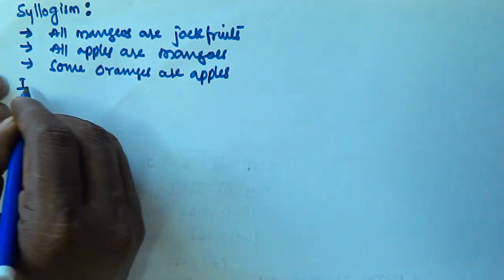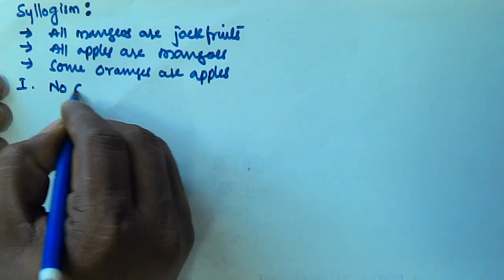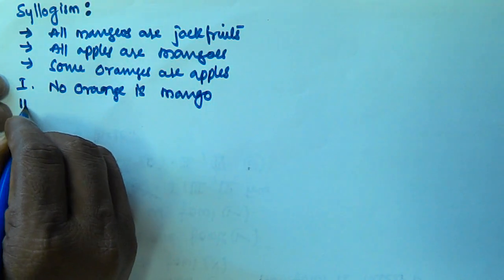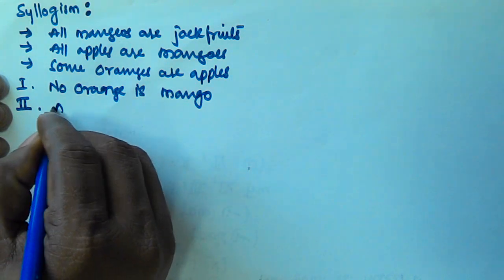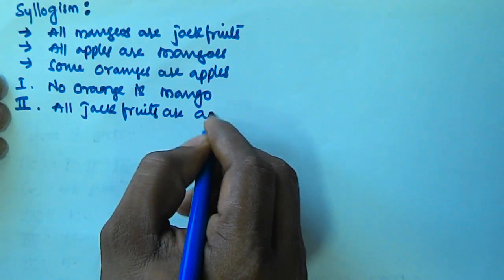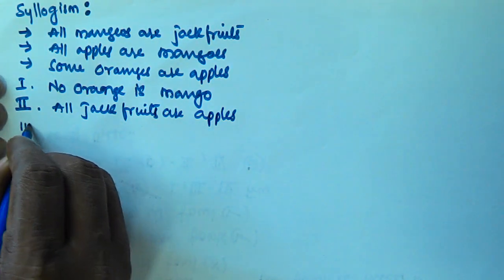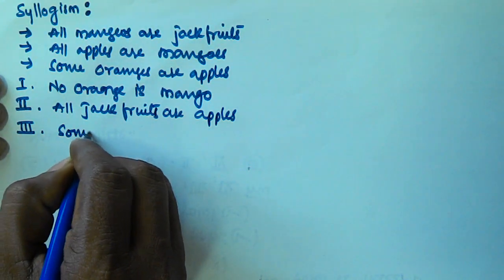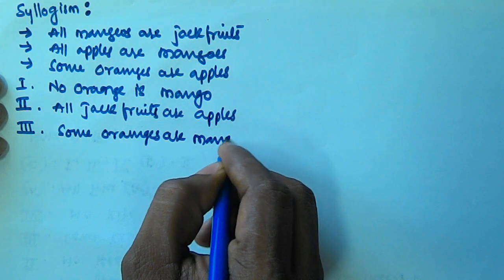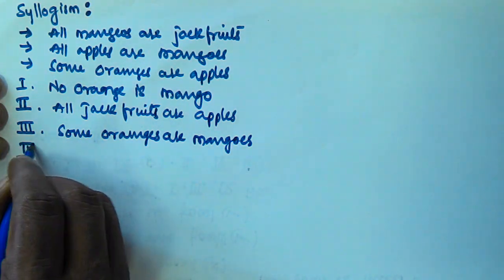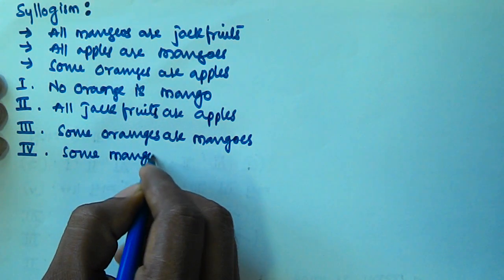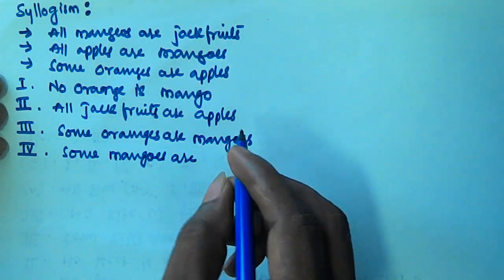The first conclusion given is: no orange is mango. The second conclusion given is: all jackfruits are apples. The third conclusion given is: some oranges are mangoes. And the fourth conclusion given is: some mangoes are apples.